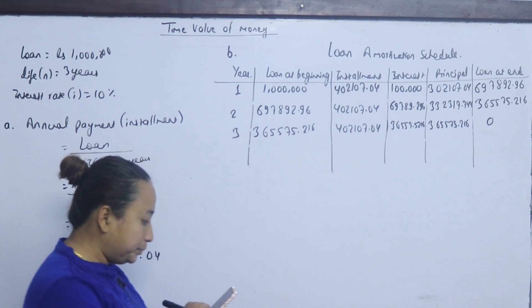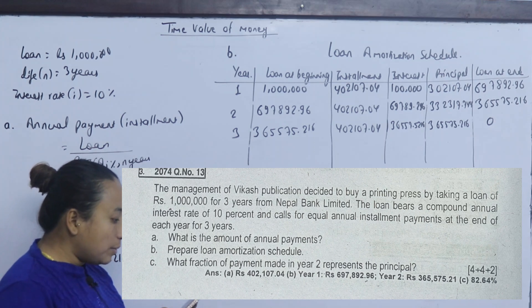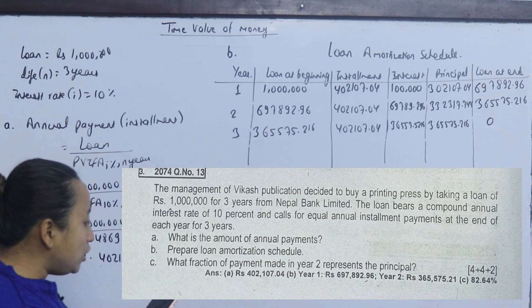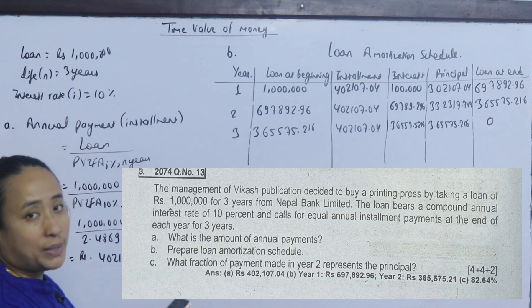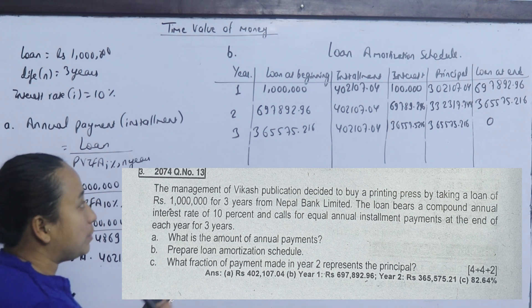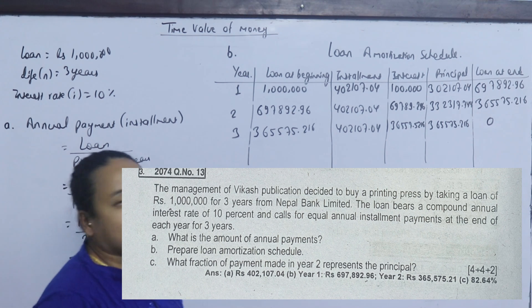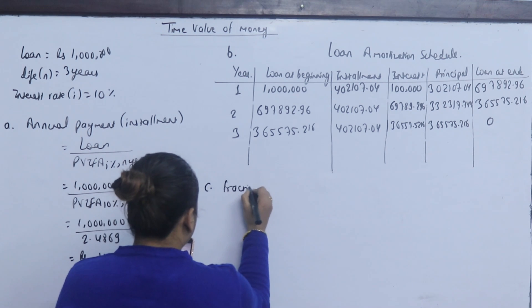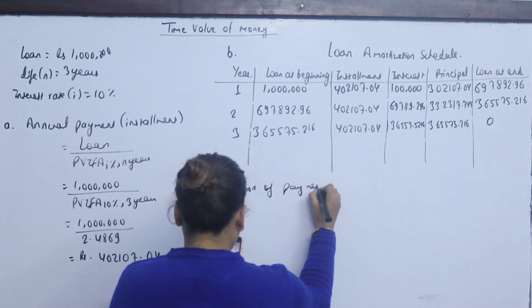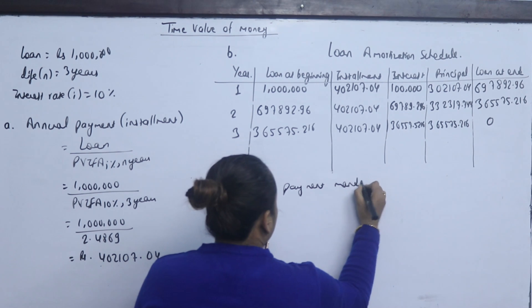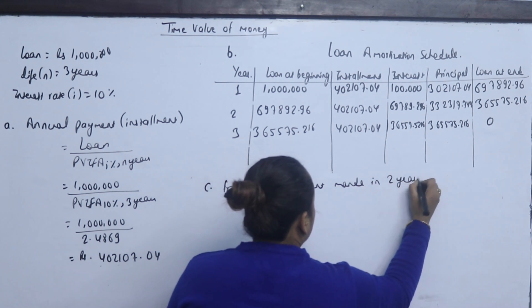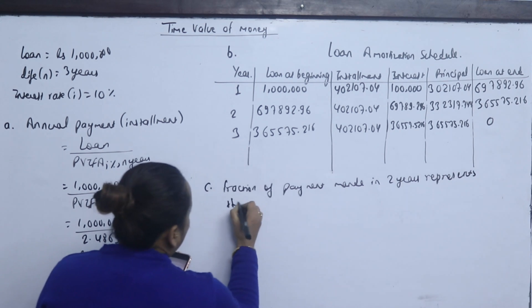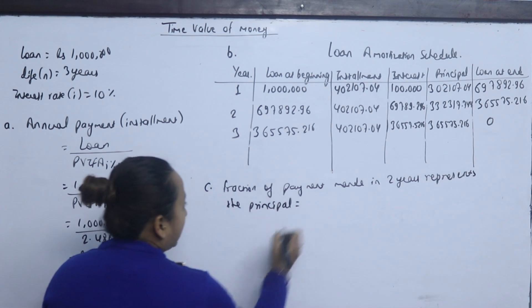Question C asks: what fraction of the payment made in year 2 represents the principal? We need to find how many percent of the installment in year 2 is accounted for by the principal repayment.